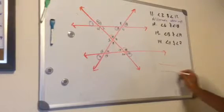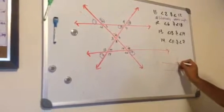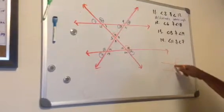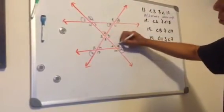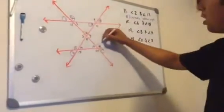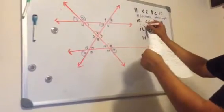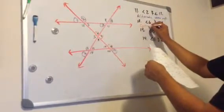So corresponding angles are ones that are, for example, over here 5 and 6. So we always skip an angle. So right here we have 6, we skip this angle, and then we have 18 over here. And this will be called corresponding angles.